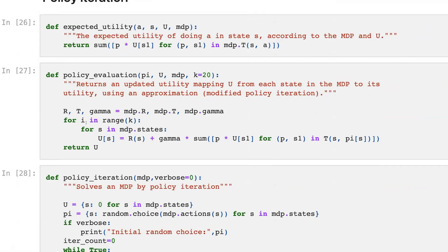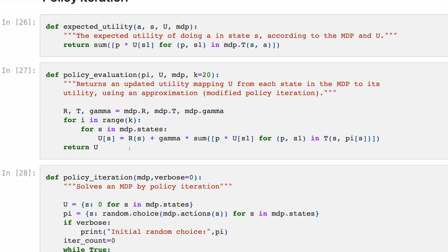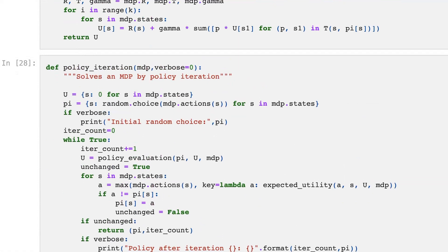Here it is. Immediate reward plus discount factor per sum of an old policy multiplied per values for all policy state pairs in a transition function. And then we return an updated utility mapping U from each state in MDP to its utility using an approximation. It's a component of policy iteration.